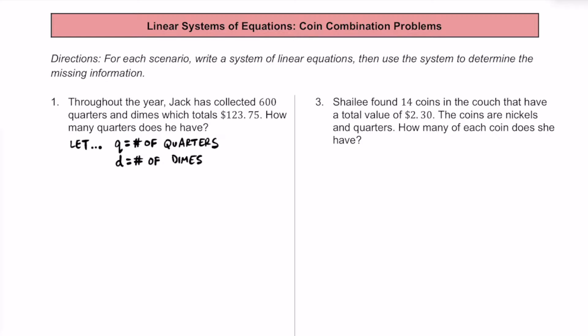We have these two different variables, and let's set up two linear equations. We know that if we have the number of quarters plus the number of dimes, that is going to be a total of 600 coins, because we know there are 600 coins in total.